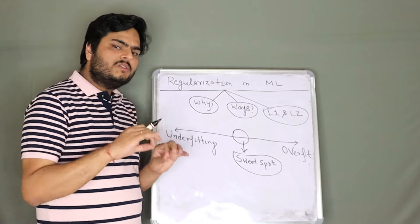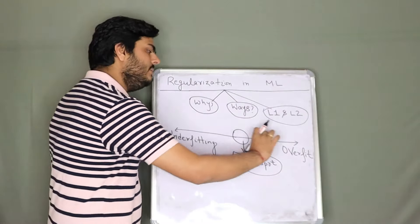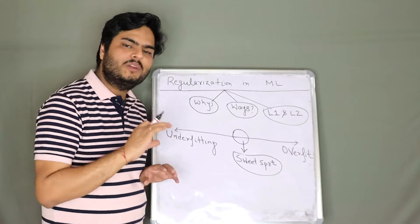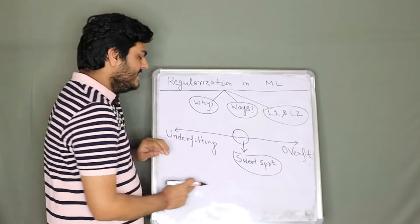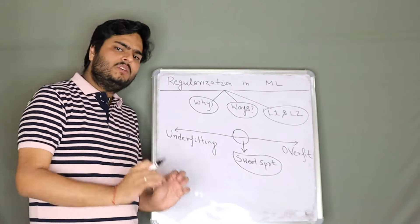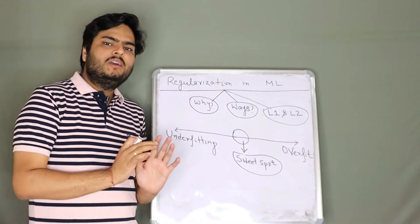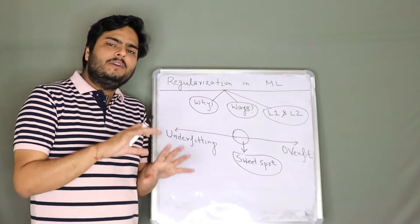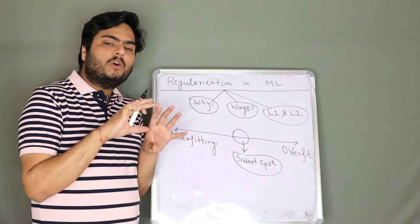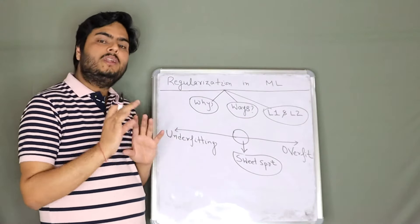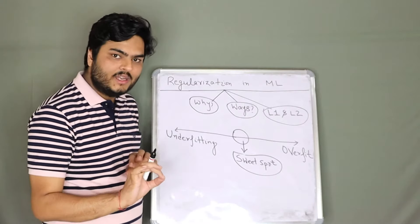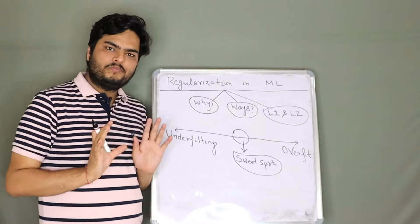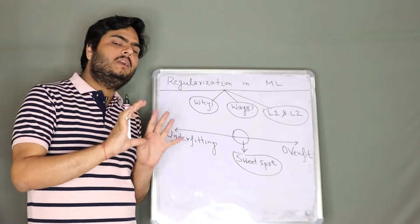The first thing I want you to refresh is this line — this line represents the whole struggle of a data science project. Every time you have data and you fit a machine learning model, you are trying to find a sweet spot. If your data is not proper or the model you are fitting is not suitable, your model will not learn — that phenomenon is called underfitting. Underfitting means your model is not learning enough.